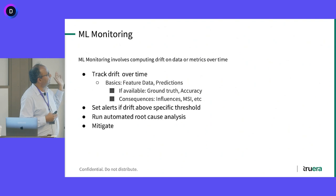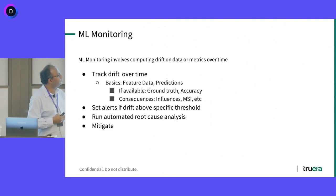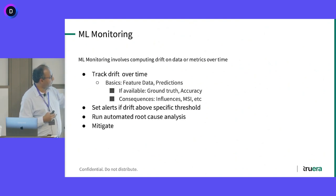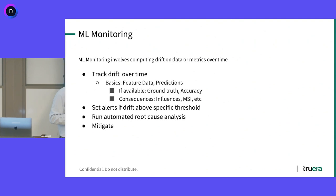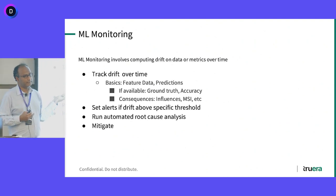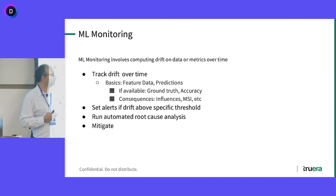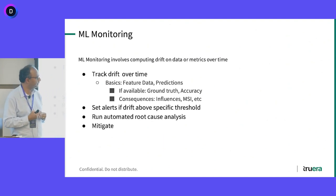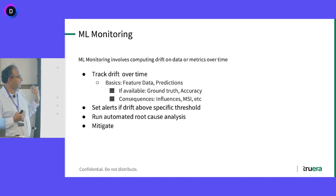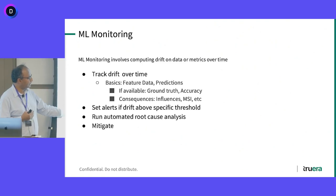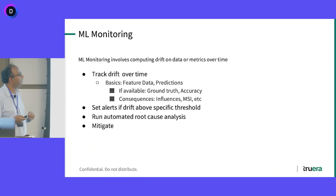When monitoring, that involves computing drift on data or metrics over time. You track drift over time — look at feature data, predictions if available, ground truth data, and accuracy of models. Track metrics related to consequential drift: feature importances and distributions of feature importances. Set alerts when drift is above a certain threshold. Then run an automated root cause analysis. And go from there to mitigate.